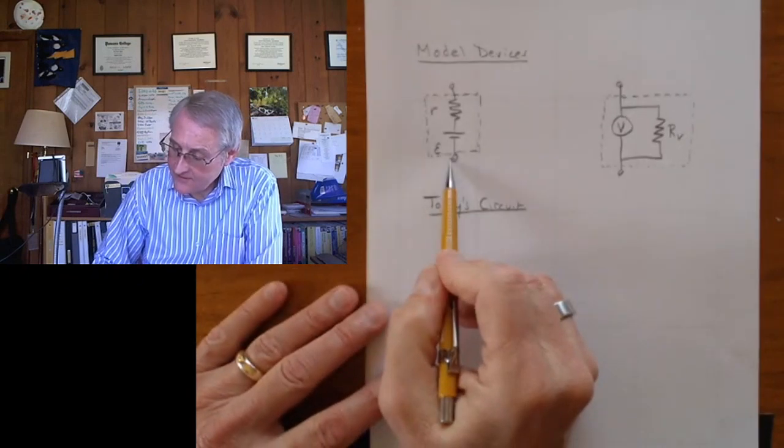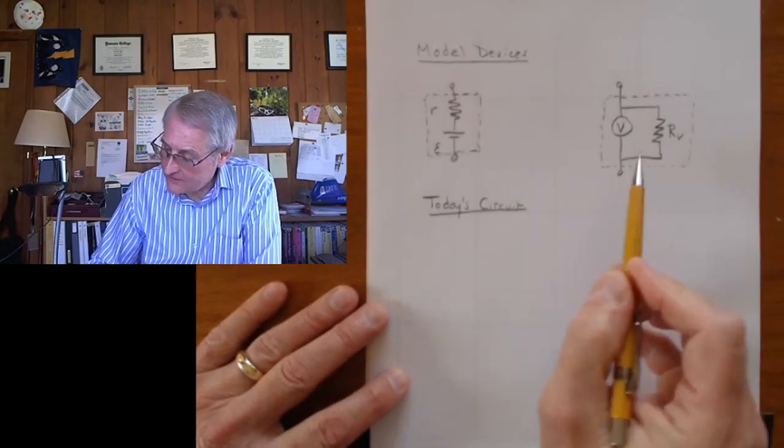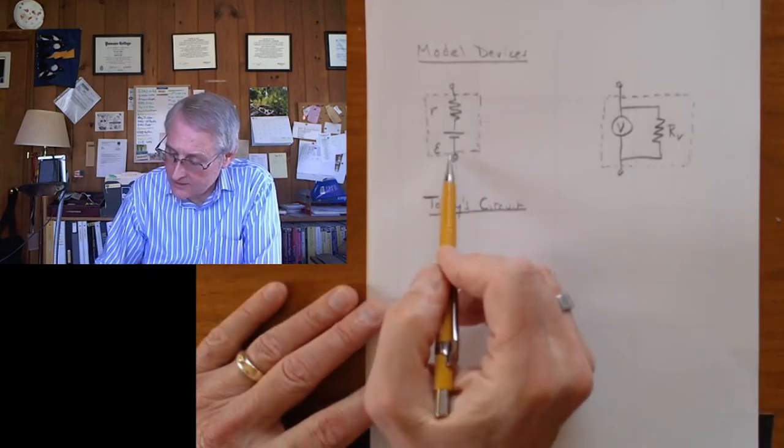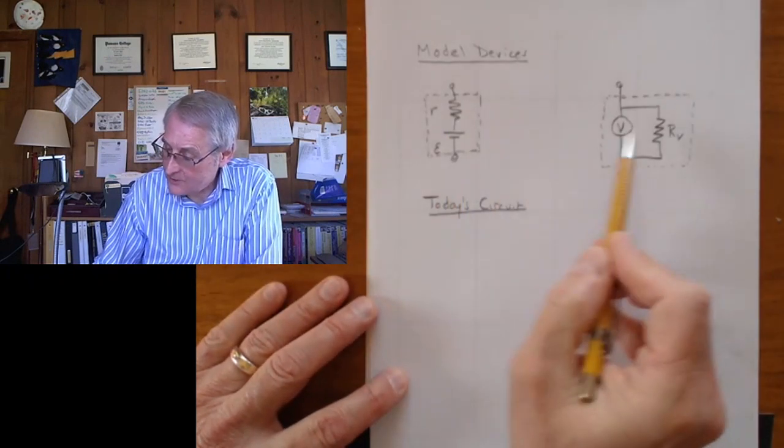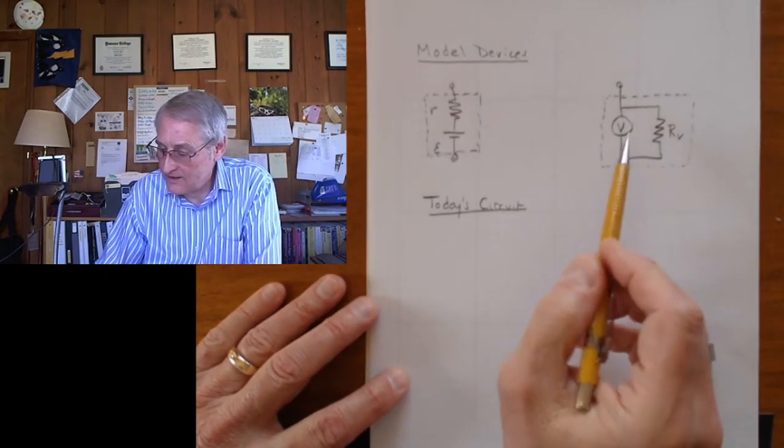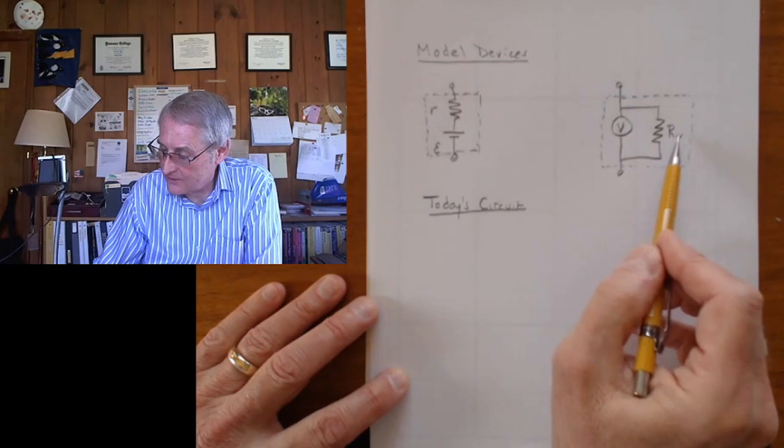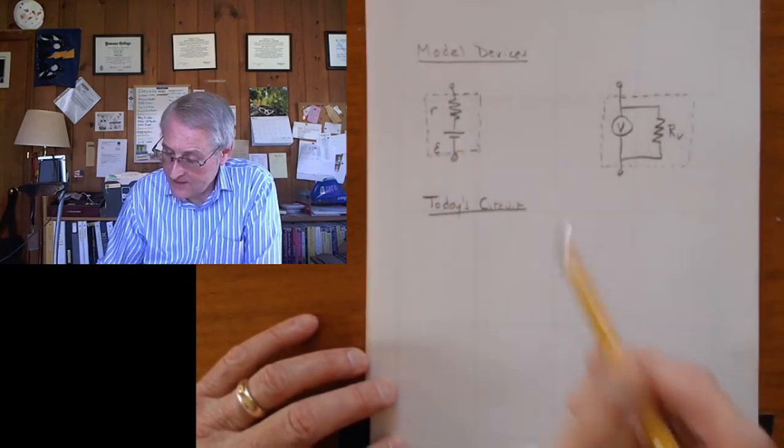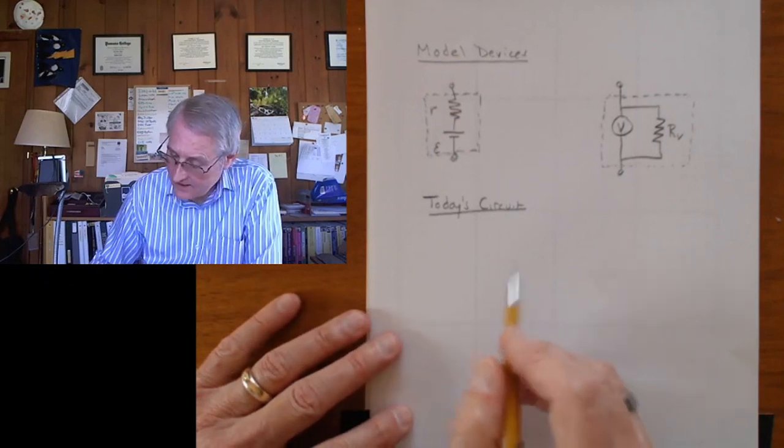We're going to put this connected across this. So if you take a real world voltmeter and connect it across a real world cell, you'll get a reading off the meter, but it'll be influenced by the internal resistance of the meter. And also, there'll be the internal resistance of the cell.